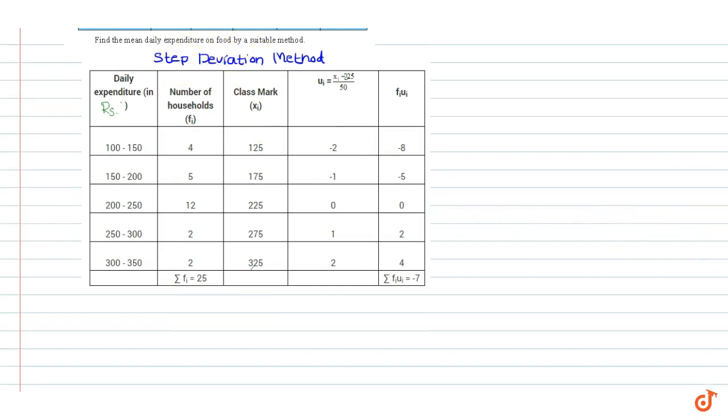Now we calculate the mean. Mean x bar is equal to assumed mean plus sigma fi into ui divided by sigma fi into h, where h is the class size.